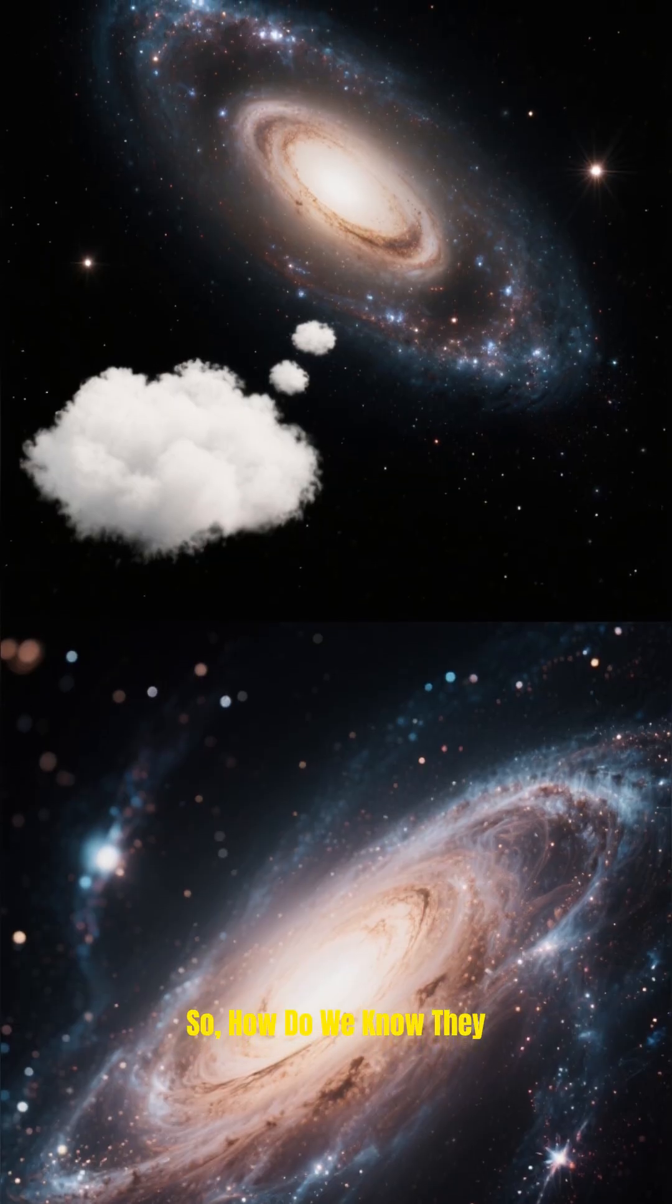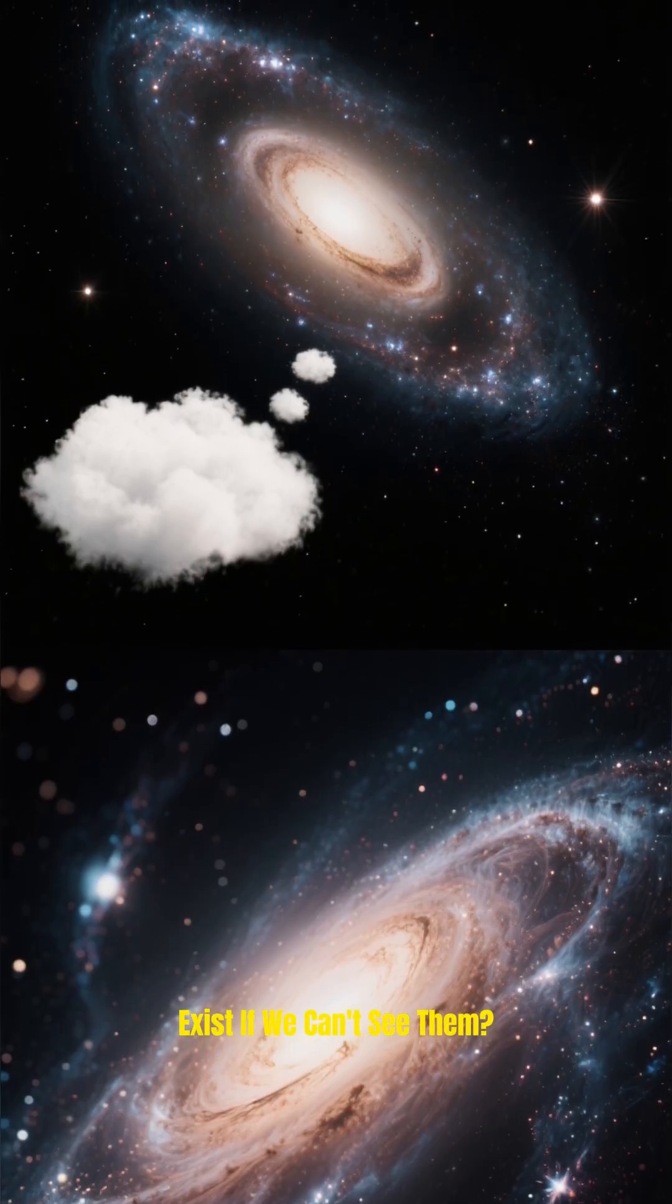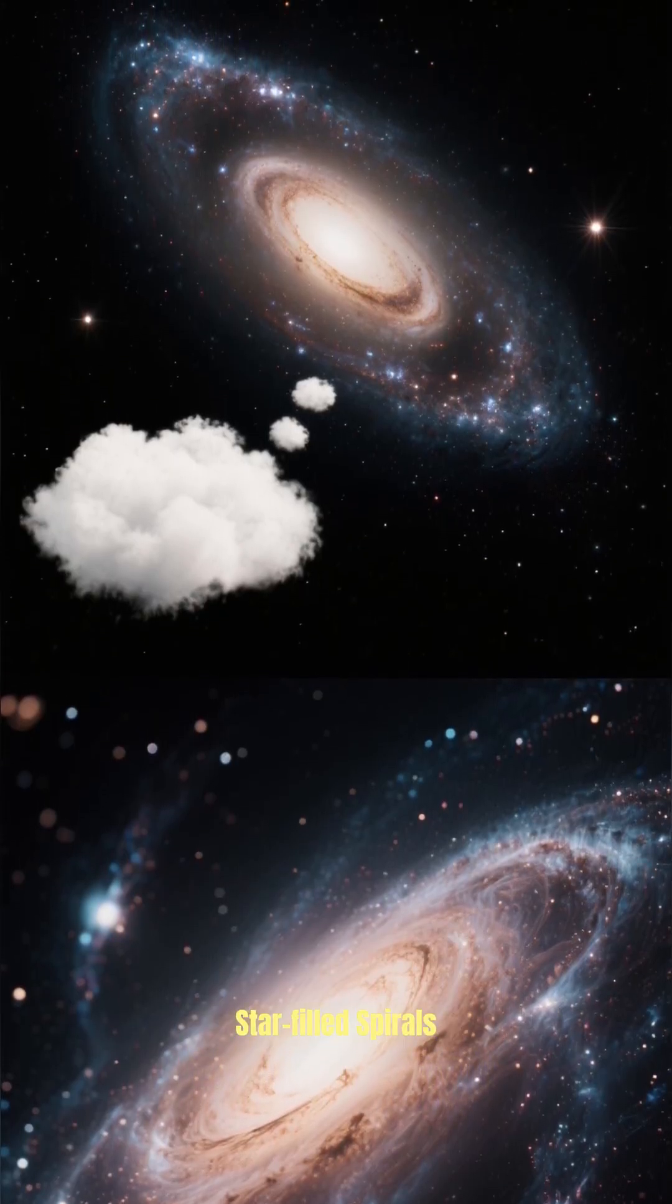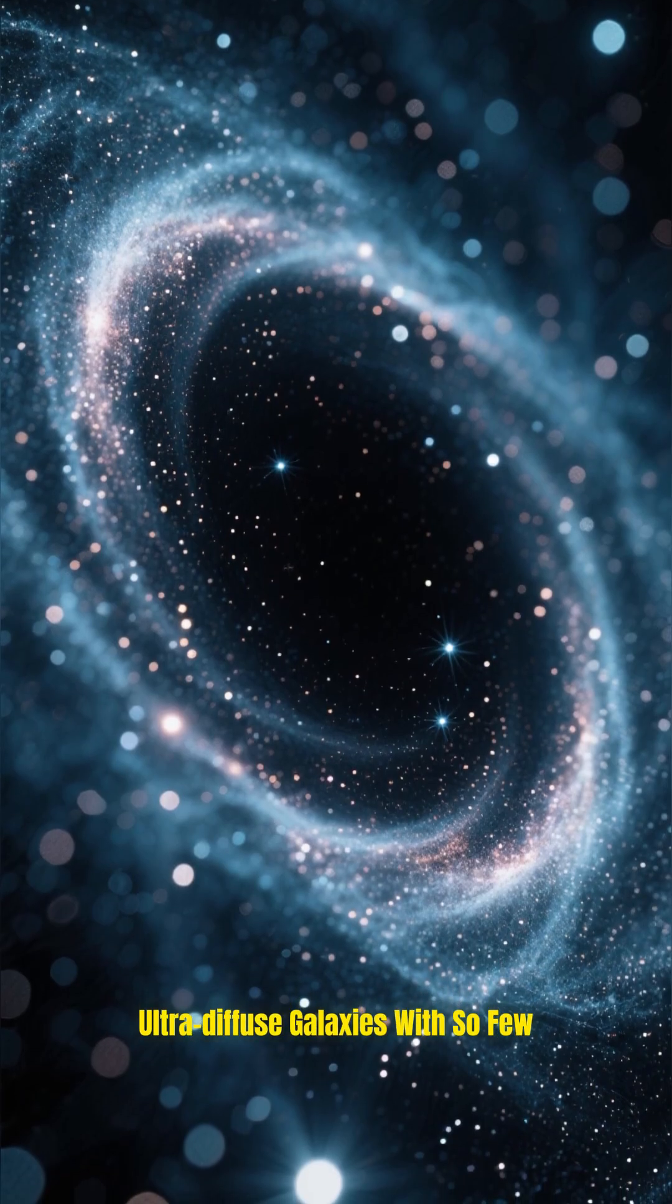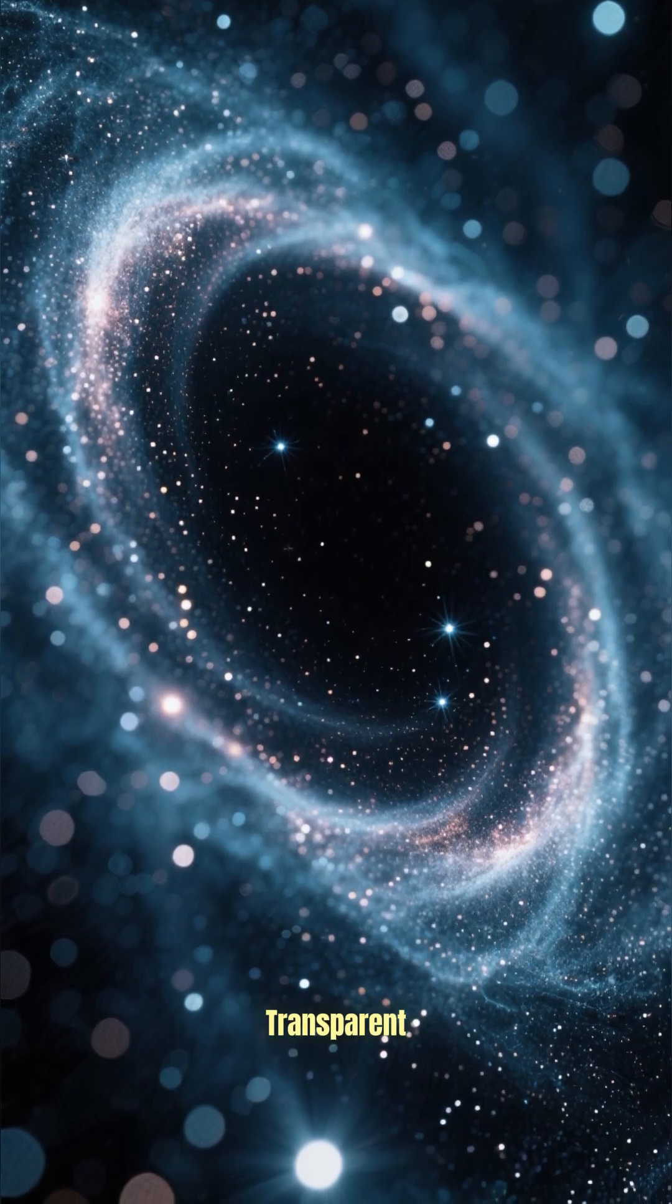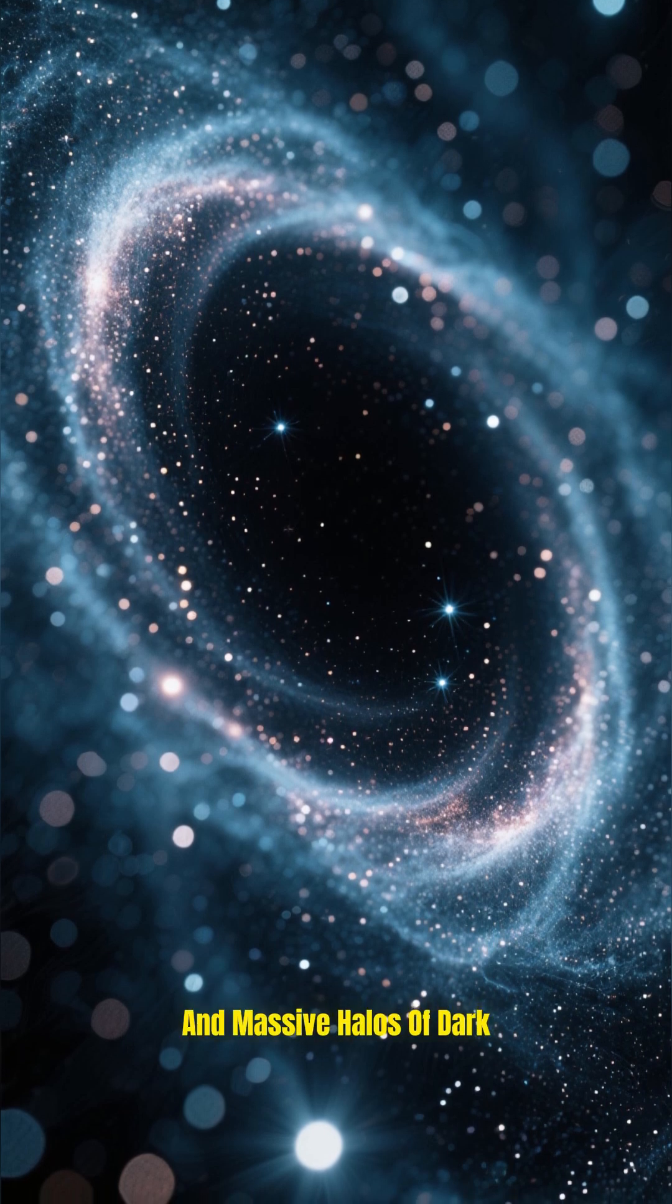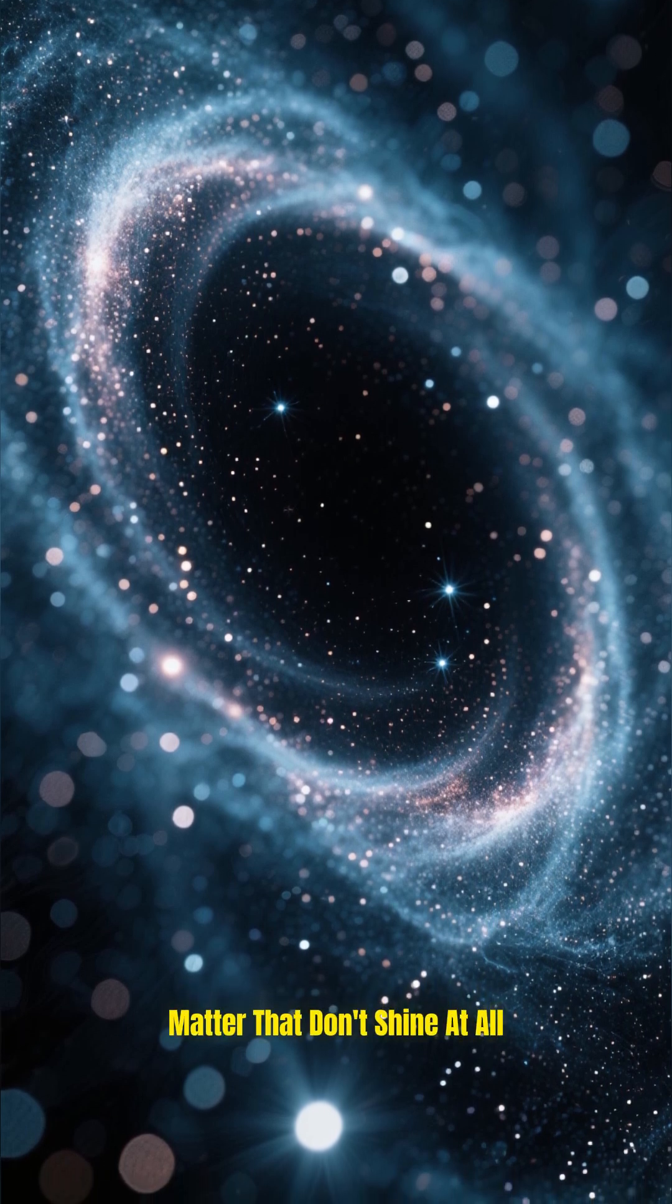So how do we know they exist if we can't see them? These aren't your typical star-filled spirals. We're talking about ultra-diffuse galaxies with so few stars they're practically transparent and massive halos of dark matter that don't shine at all.